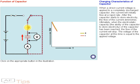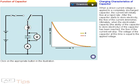the flow of the current diminishes. Ultimately, when the electrostatic capacity of the capacitor has been reached, the flow of the current will stop. The voltage of the capacitor at this time is equal to the applied voltage.